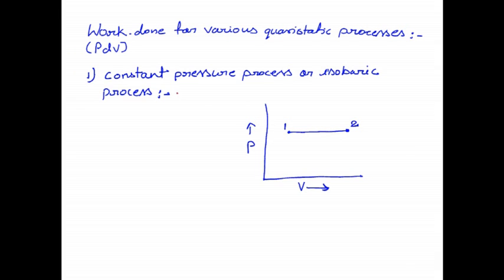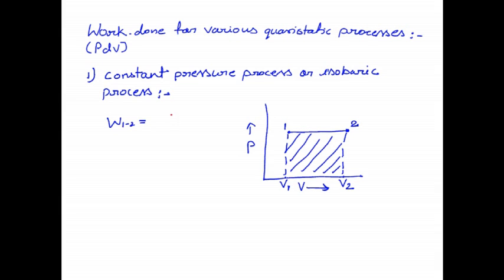Here pressure is constant because the process is a constant pressure process, so pressure is constant and volume varies. Considering volume V1 at the initial state and V2 at the final state, this total hatched area shows the work done. If we denote this work done as W12, it will be the integral from V1 to V2 of P dV. So the work done will be P(V2 − V1). This hatched area denotes the work done for the constant pressure or isobaric process.